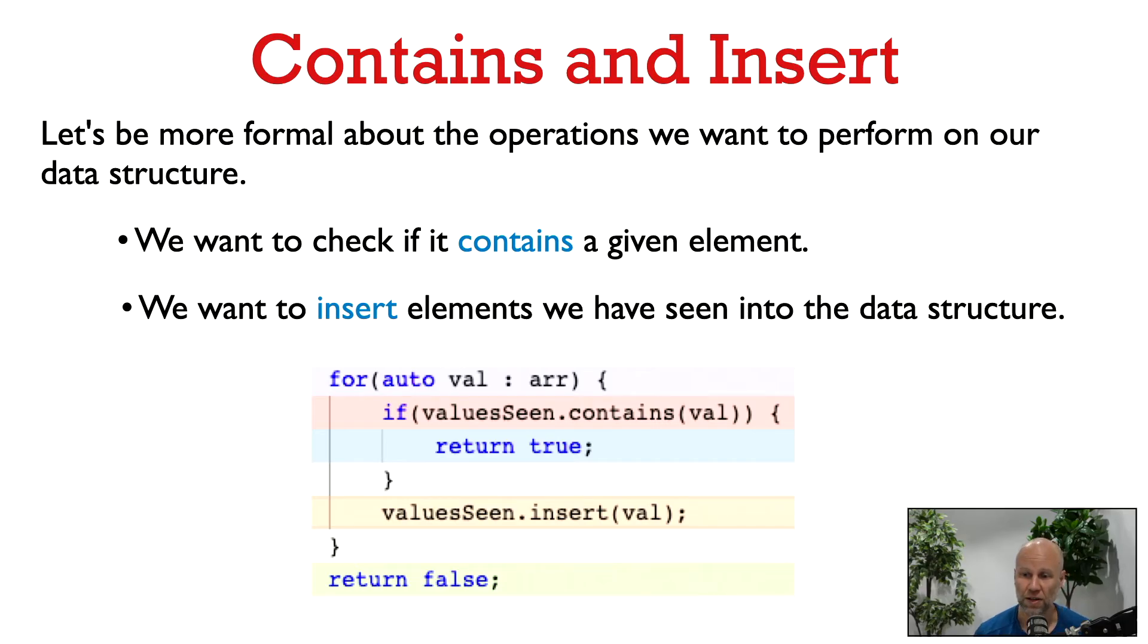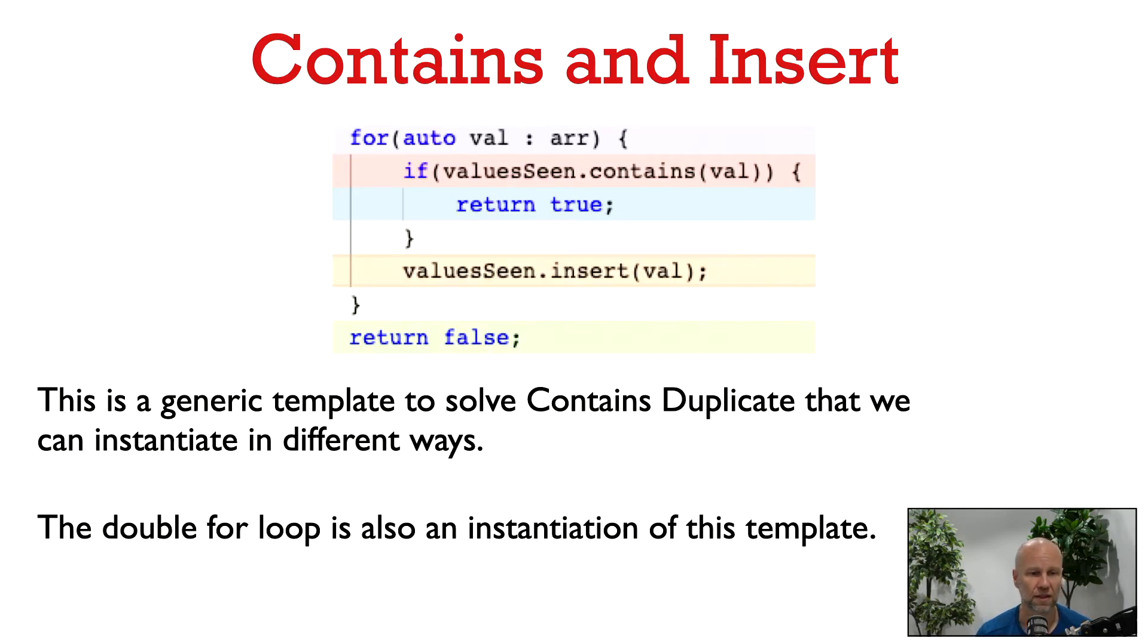So here we have a program written in these two abstract operations, contains and insert. Note that the double for loop is also an instantiation of this template. We implemented contains by an inner for loop, and we did not need to do insert because we were just using the original array as our data structure.